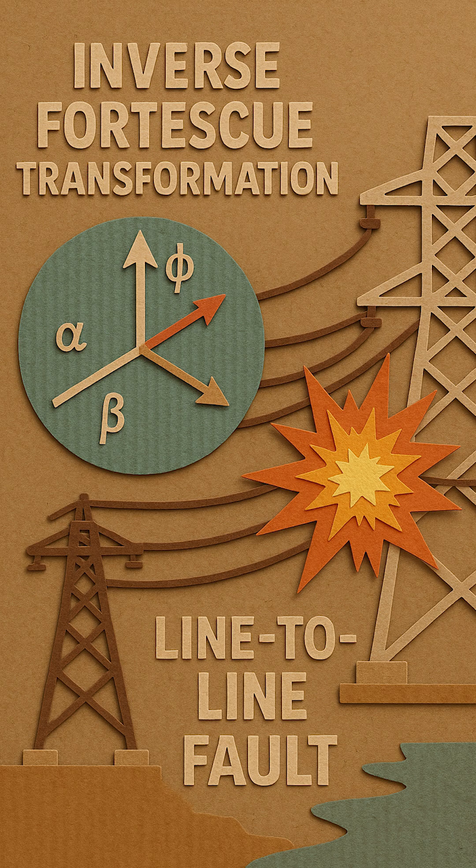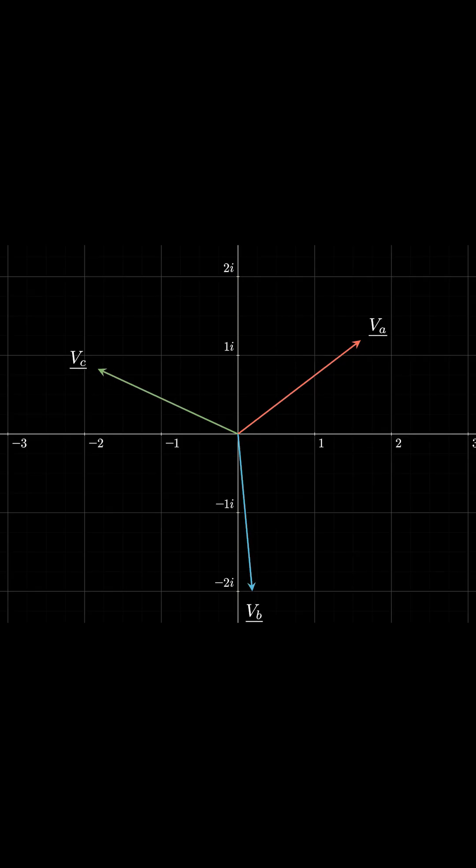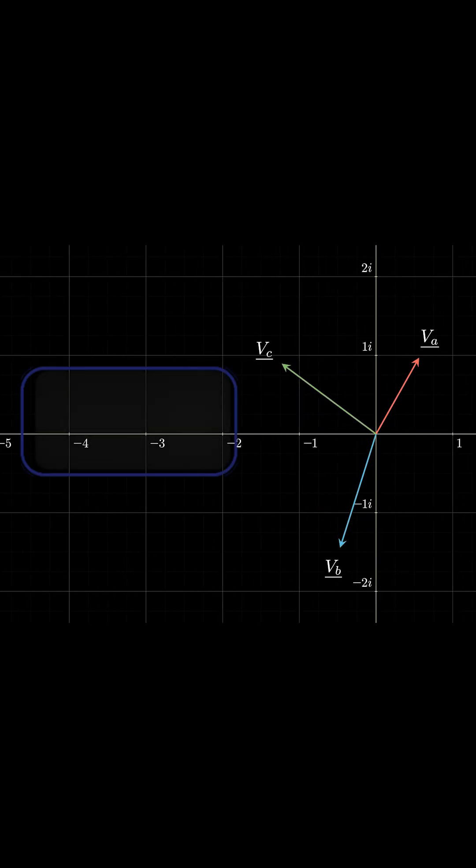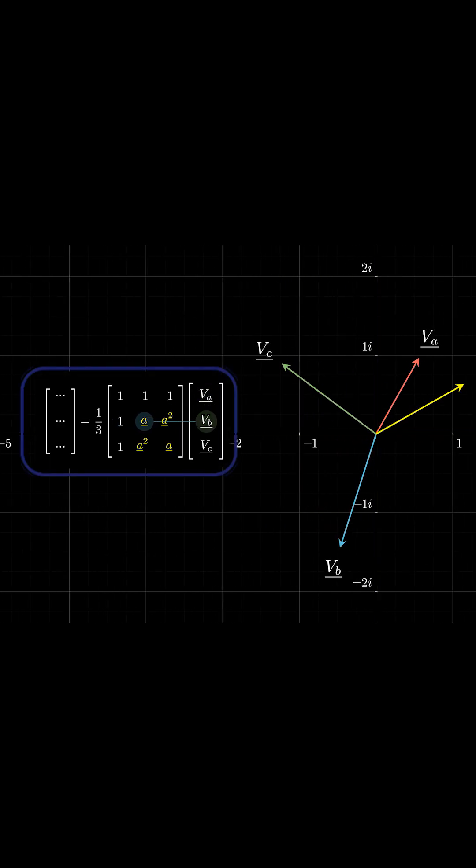Let's apply the inverse Fortescue transformation to a random unbalanced system. From a simple matrix multiplication, we obtain the positive sequence.